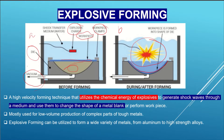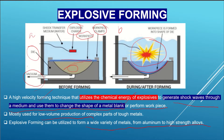Explosive forming is a high velocity forming technique. It utilizes the chemical energy of explosives to generate shock waves through a medium and uses them to change the shape of a metal blank. The initial material is called a blank, and it is usually used for low volume production. It can be used to form a variety of materials from aluminum to high-strength alloys.